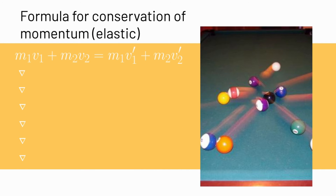Let's look at the formula for conservation of momentum. This is for an elastic collision, which means the objects bounce off of each other. One object moves toward another, they collide, and the objects go off in different directions. The formula is: M1 times V1 plus M2 times V2 equals M1 times V1 prime plus M2 times V2 prime.